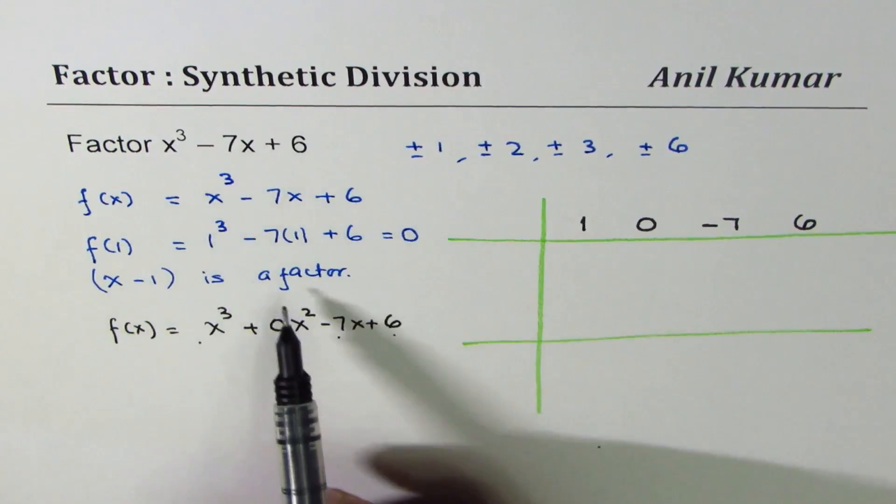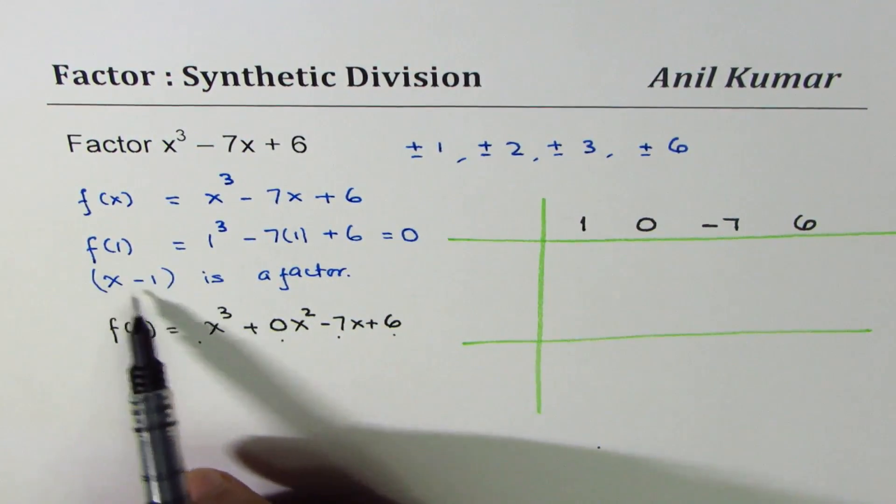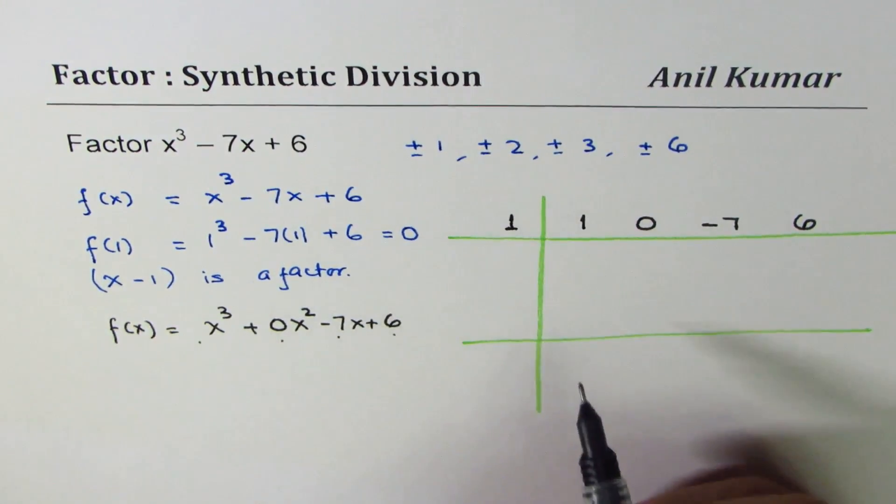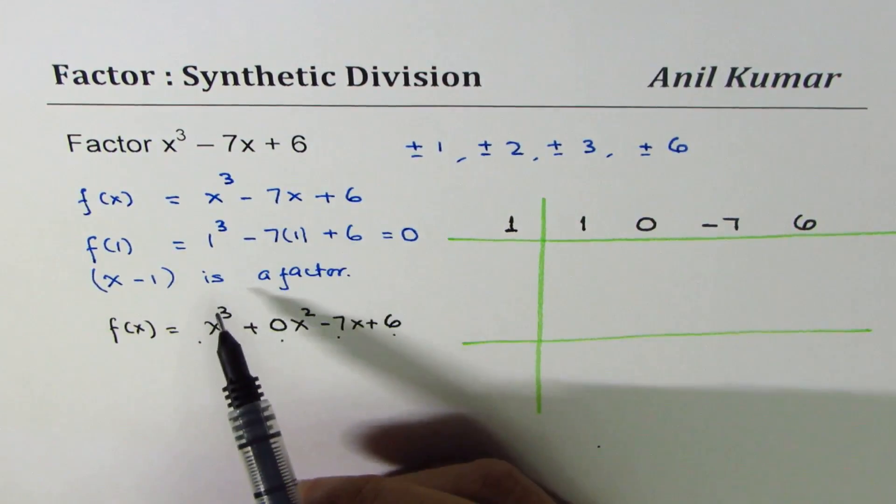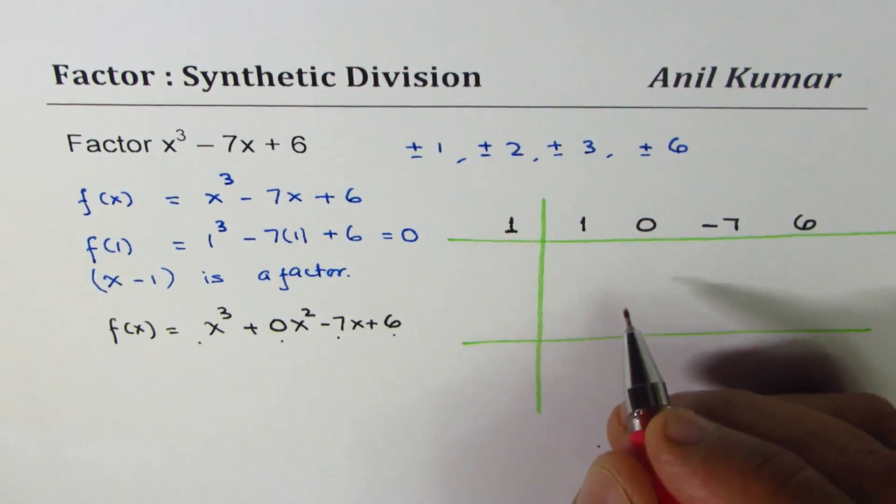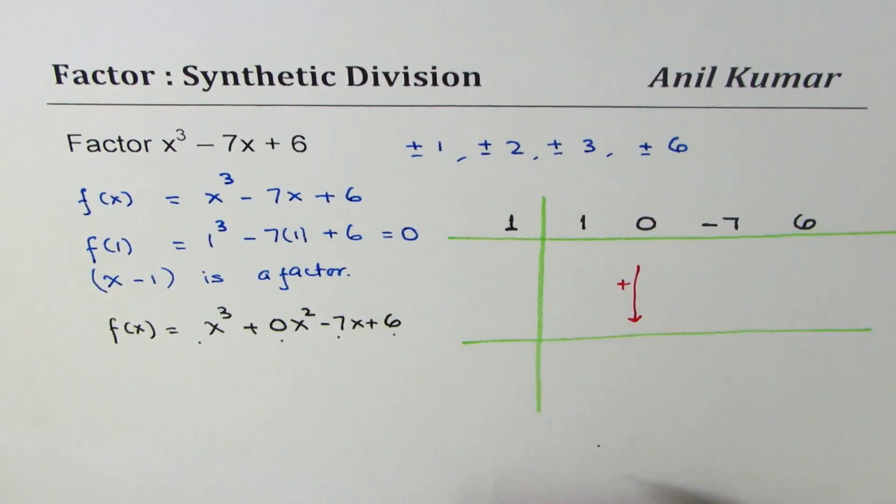Since we are dividing by a linear factor, in this case, what makes that 0 is 1. So we'll divide by 1. In normal division, we divide by x - 1 and subtract each value. In this case, we are going to add each value. The operation will be addition when you move downwards.